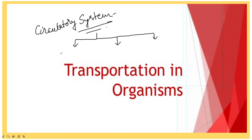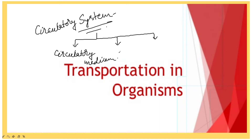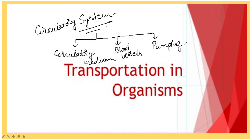The first part is the circulatory medium. What is the circulatory medium? The circulatory medium is blood, tissue fluid, and lymph. The next part is blood vessels — arteries, veins, and capillaries. And the third part is the pumping organ — the heart.